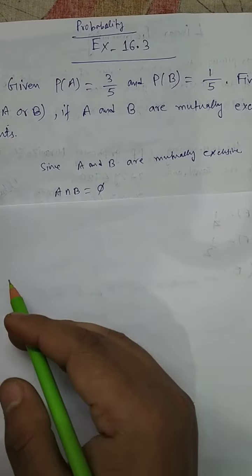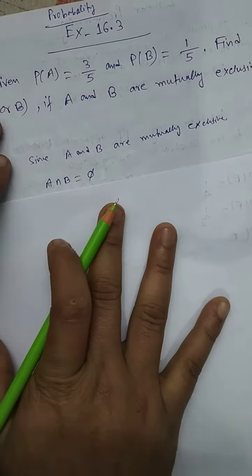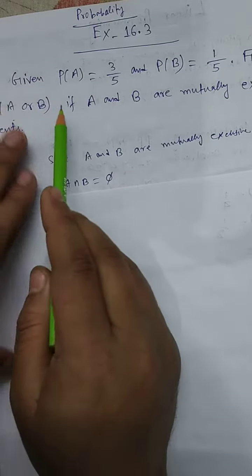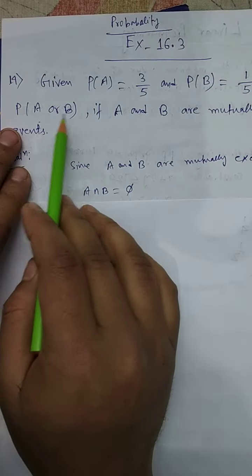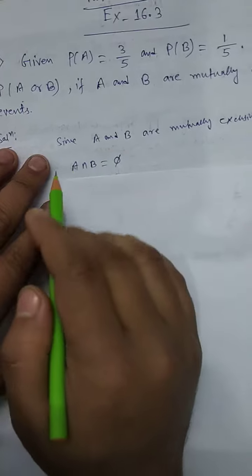Today I am going to discuss chapter Probability, Exercise 16.3, Question Number 14. Given: probability of A equals 3/5 and probability of B equals 1/5. Find probability of A or B if A and B are mutually exclusive events.